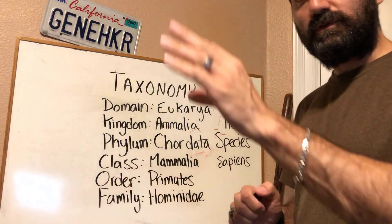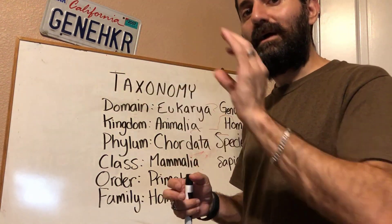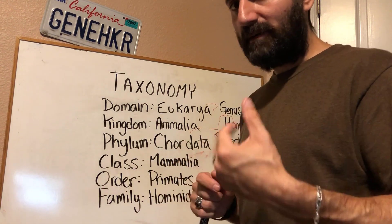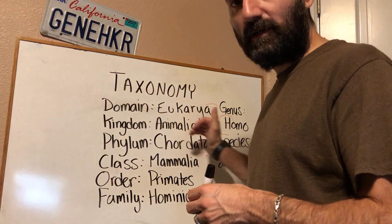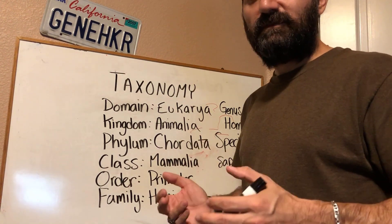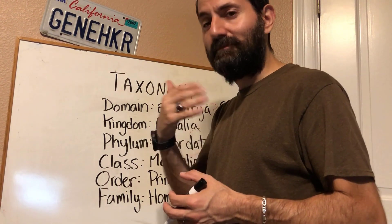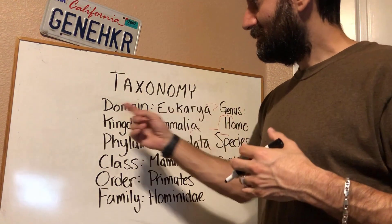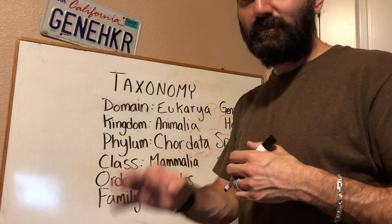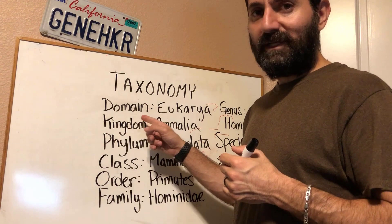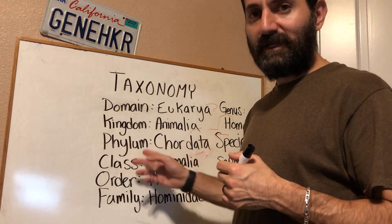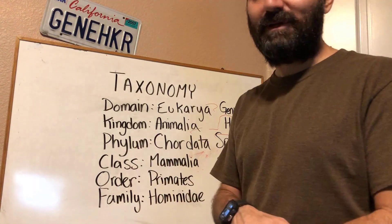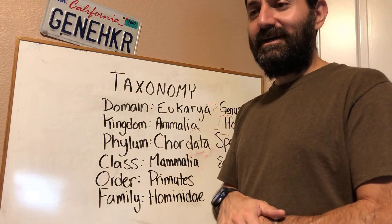A taxonomist would group organisms based on their relatedness into the proper categories. A good way of remembering this in order — if you want to remember from domain all the way down to species — is a mnemonic device. A mnemonic device is something you can use to remember lists of things. My mnemonic device is: dude, King Philip came over for good spices. Dude for domain, king for kingdom, Philip for phylum — you get the rest. Dude, King Philip came over for good spices. Hopefully this helps you remember the taxonomical hierarchy.